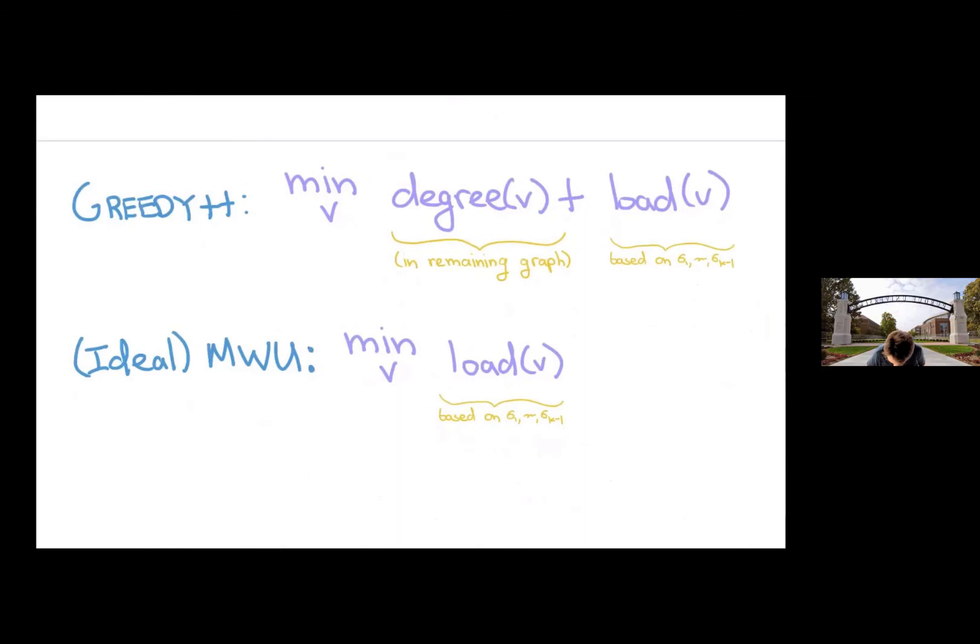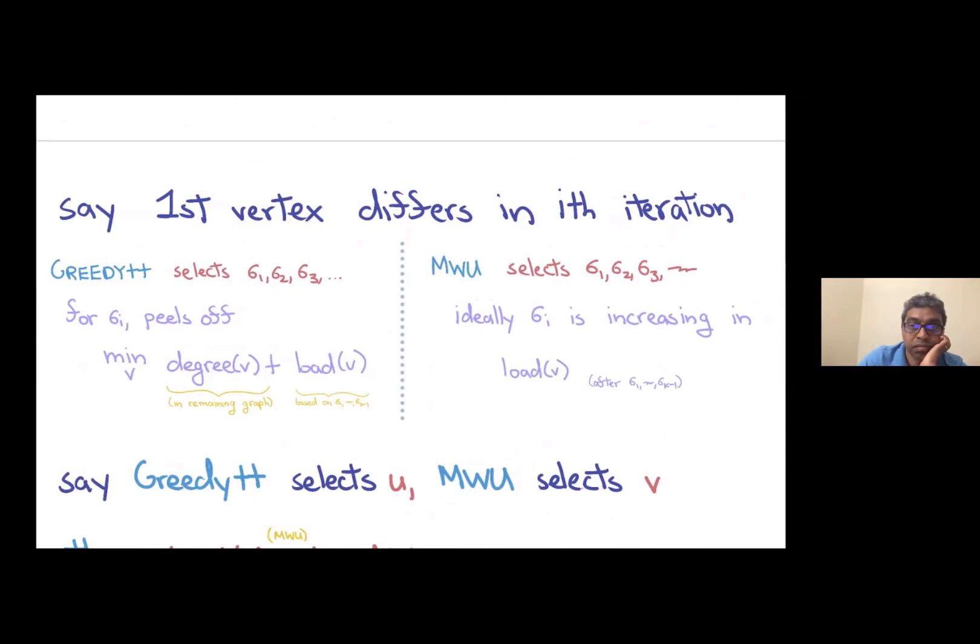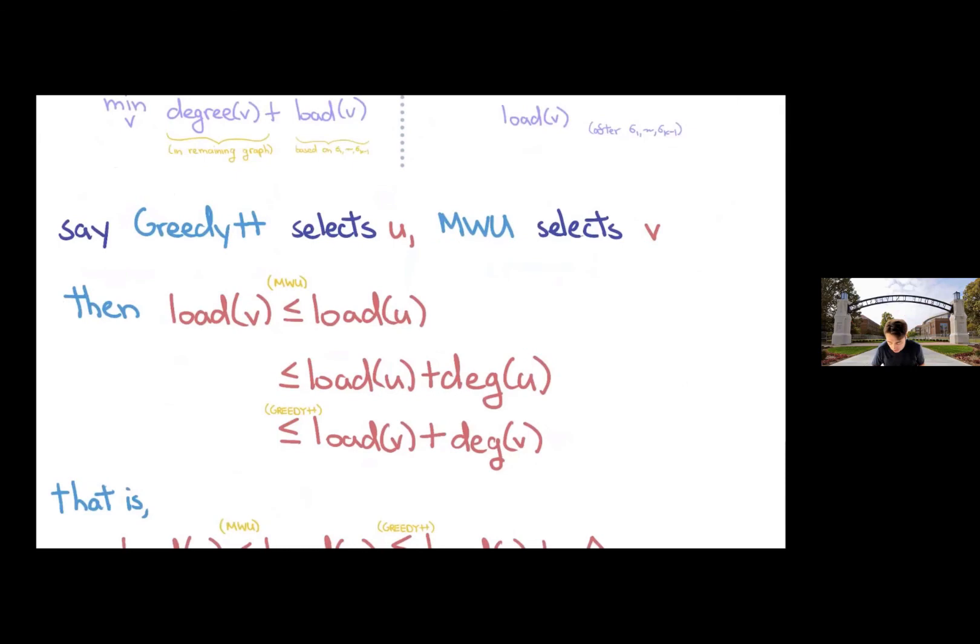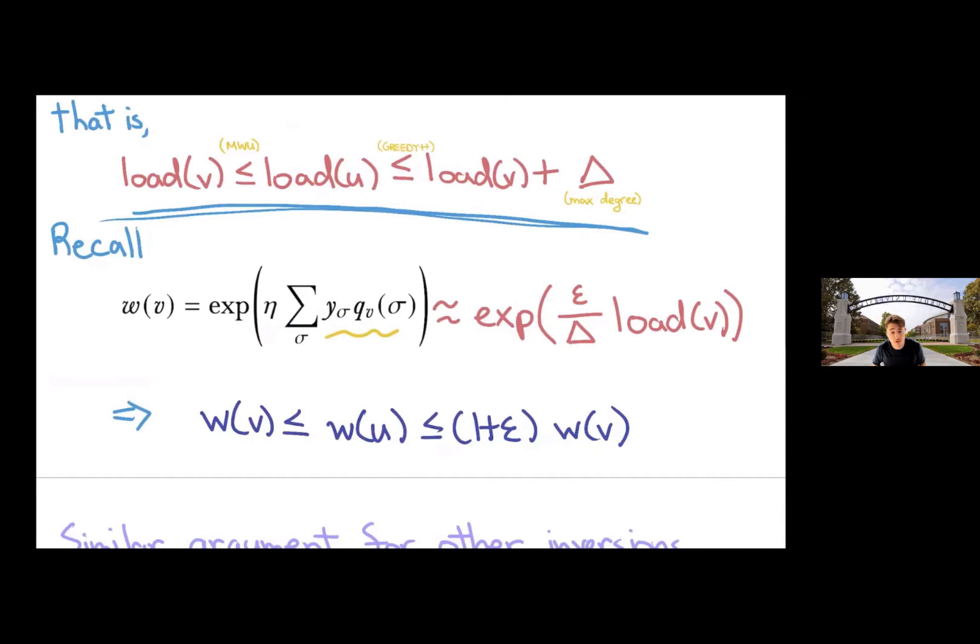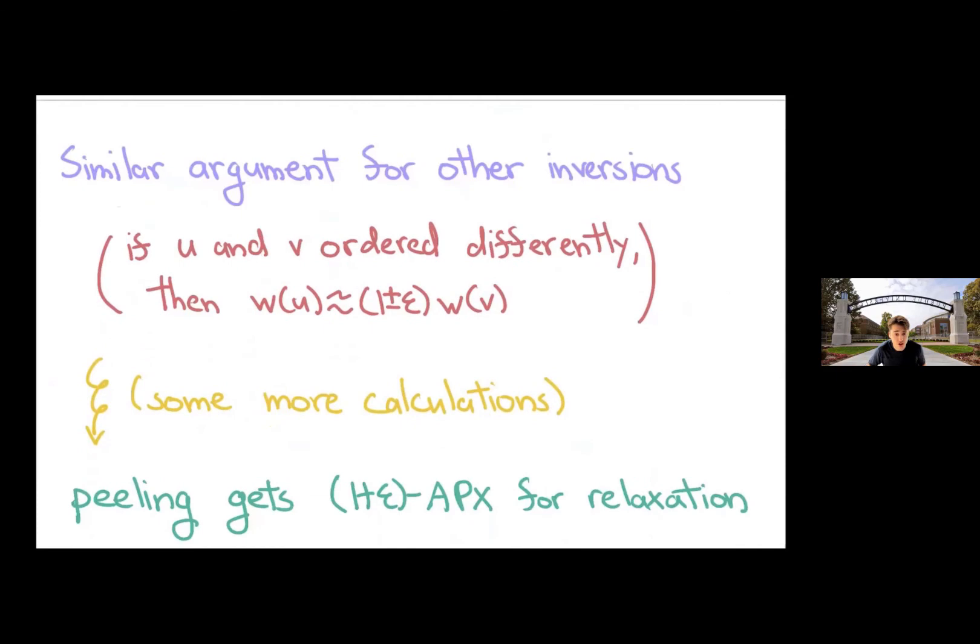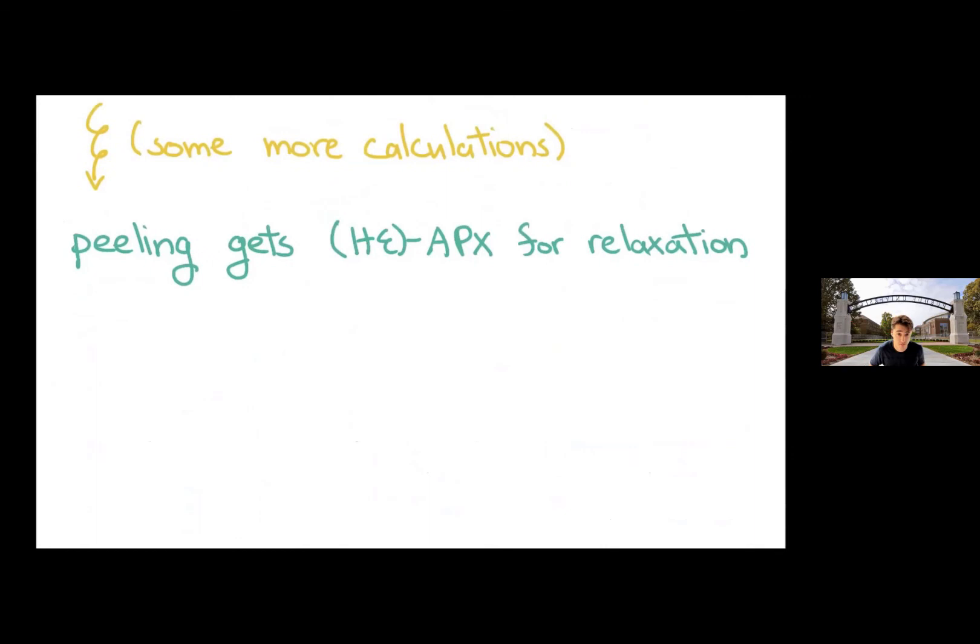So greedy plus plus is trying to do things based on the load and the degree in the middle of the peeling process. And the multiplicative weights would just do the load statically at the beginning of the iteration. So just to get some high level idea of the remaining parts of the proof. Suppose in some fixed iteration it starts peeling, and the first vertex differs. Greedy plus plus selects U and MW selects V. Just based on how these two algorithms select their vertices, I know that the load of V is at most the load of U. And I also know that the load of U plus the degree of U is at most the load of V plus the degree of V. This is the remaining degree in the graph. So in particular, there's some relation whenever things get flipped between the two loads. And the weights were exponential in the loads divided by the maximum degree. So we can see that for these two vertices, the weights must've been fairly similar. So you can do a similar argument for the other inversions. Whenever two vertices are flipped in the ordering, they must have similar weights and you do a few more calculations. And then you can show that peeling is actually getting a one plus epsilon approximation for the relaxation.